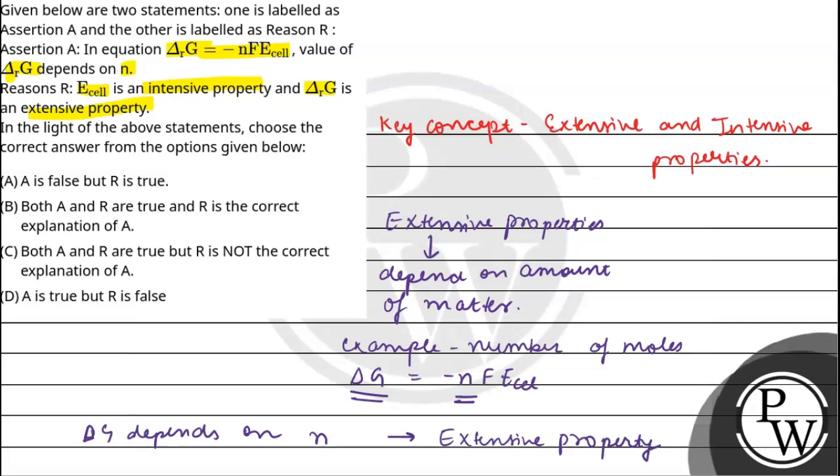So delta G, which is Gibbs free energy, this will be extensive. Next, let's talk about Ecell.